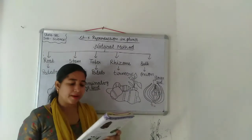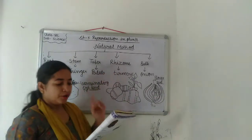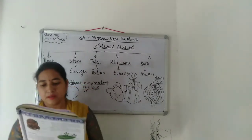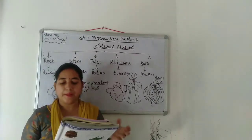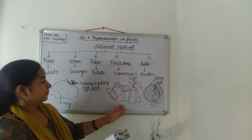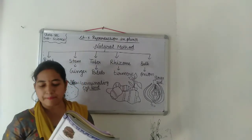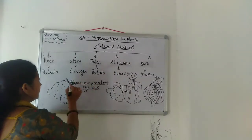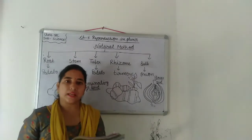Now, tuber is also a modified underground stem. The eyes or buds present on the tuber develop into new plants. Like ginger, potato is the best example of a tuber. Potato aapka best example hai tuber ka bhi — yeh bhi modified stem hai.